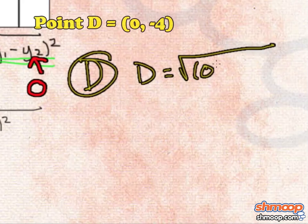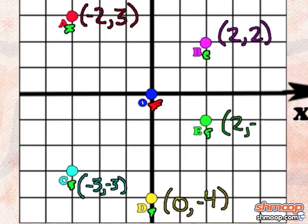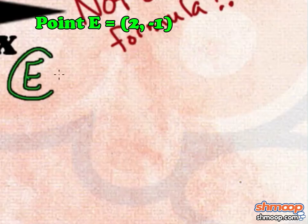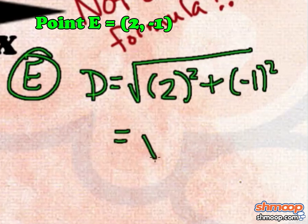Point D at 0, minus 4 gives us 4. And point E at 2, minus 1 gives us the square root of 5.